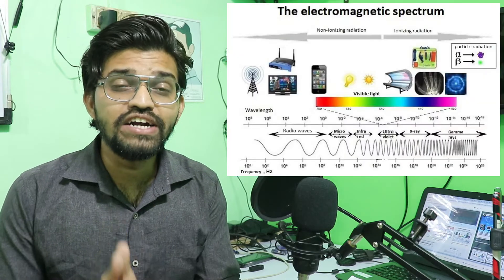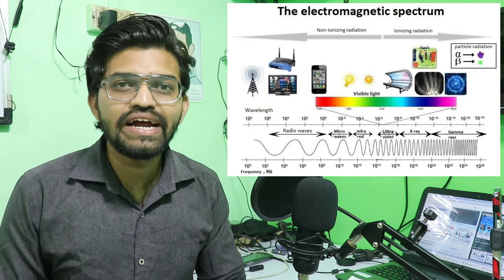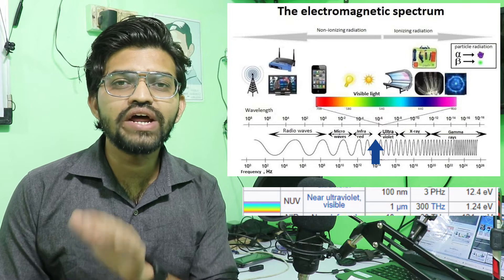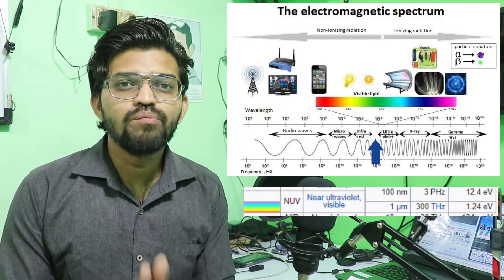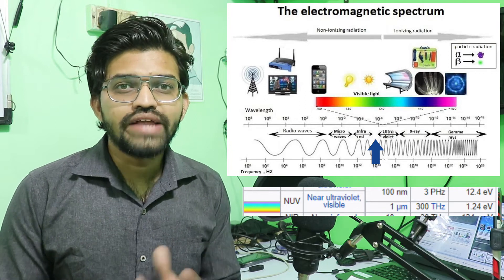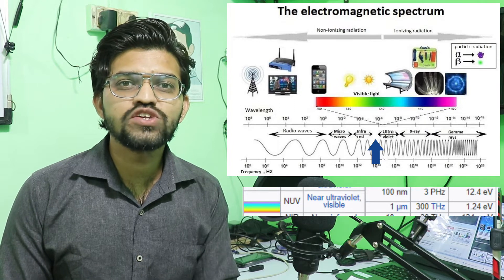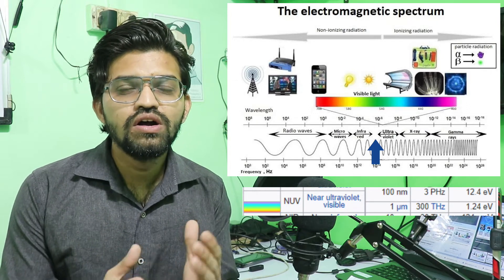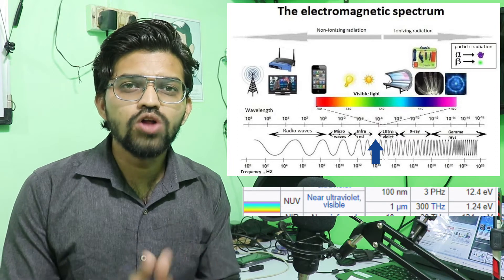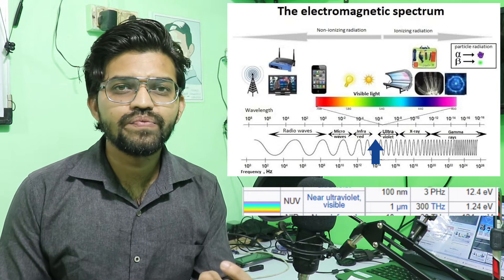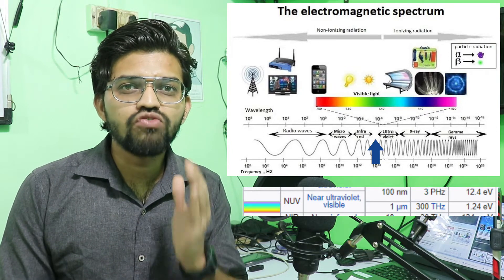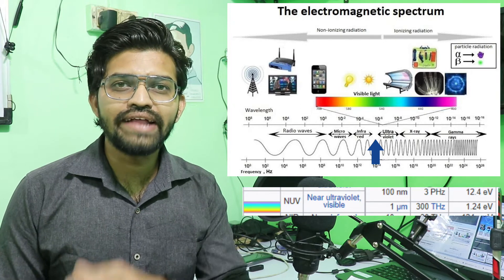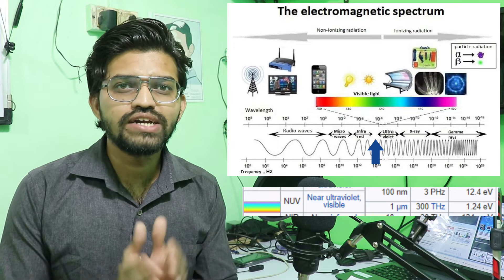Next comes the visible light spectrum, which we can also call NOV. It has a frequency of 300 terahertz (300 × 10¹² Hz), and the wavelength is very short — about 1 micrometer (1 × 10⁻⁶ meters). The energy carried by each photon in visible light is 1.24 electron volts, which is higher than that of microwaves, radio waves, and infrared waves.